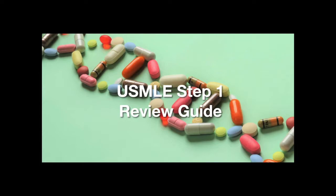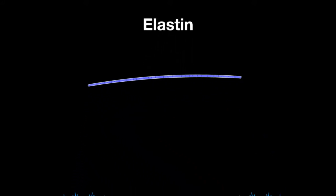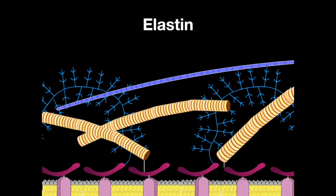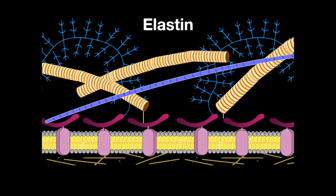Welcome to the Step 1 Review Study Guide. In this lesson, we learn about elastin and Marfan syndrome. Elastin, just as you might expect from the name, is a protein in the extracellular matrix that gives tissues their elasticity.